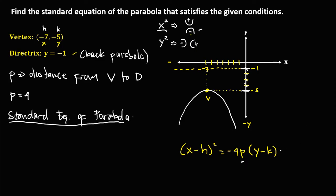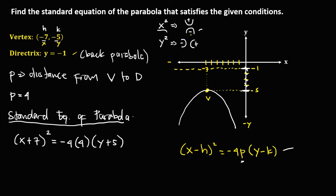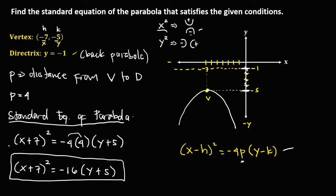Using this formula, we have x minus h, and since h is negative 7, this becomes x plus 7, then squared, equals negative 4 times p, and p is 4, times y minus k. Since k is negative 5, that becomes y plus 5. So negative 4 times 4 is negative 16. Therefore the standard equation is x plus 7 squared equals negative 16 times y plus 5.